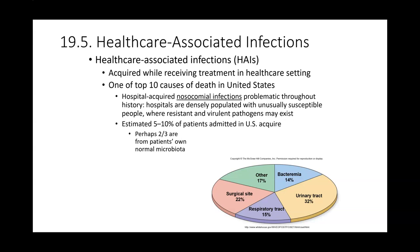This is a chart that shows different types of HAIs. The most common HAI that you can get is a urinary tract infection. Then you could have an infection at the surgical site, a respiratory tract infection, or bacteremia — meaning you're septic with bacteria or something else.